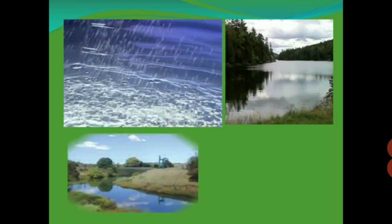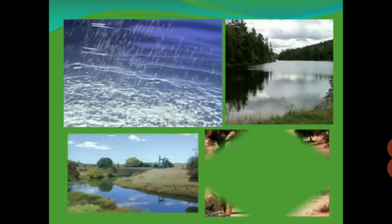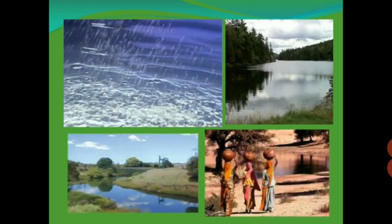Now children, try to identify these sources of water. These are all very common sources of water and I think all of you must have seen them at one point or another. These are all natural resources of water. The first one is rain, then river, canal, and the last one is pond or lake.